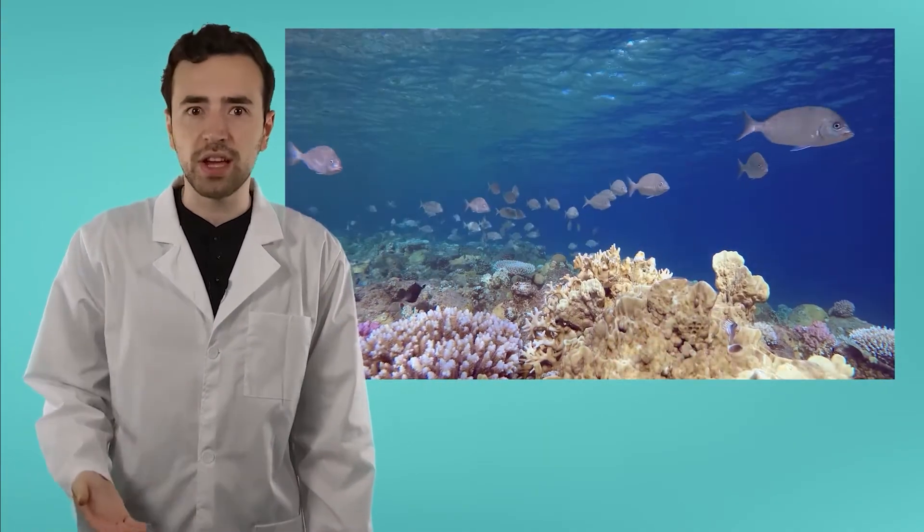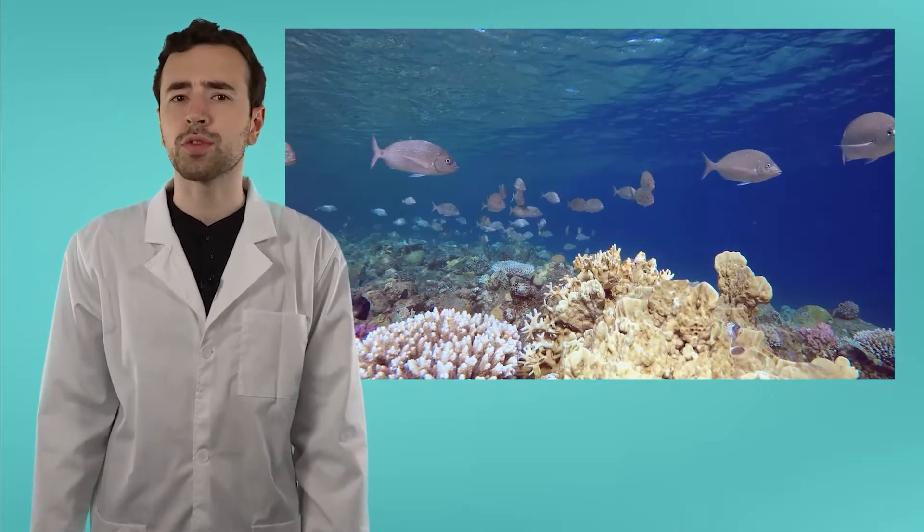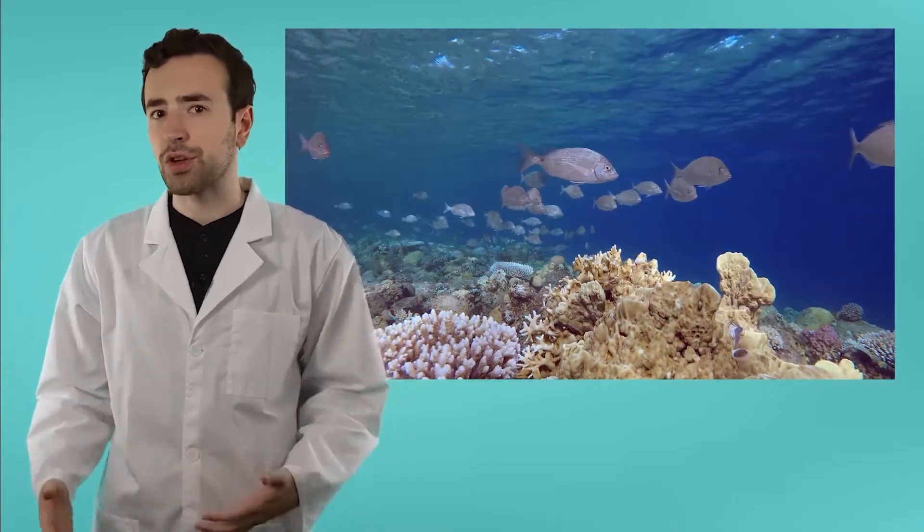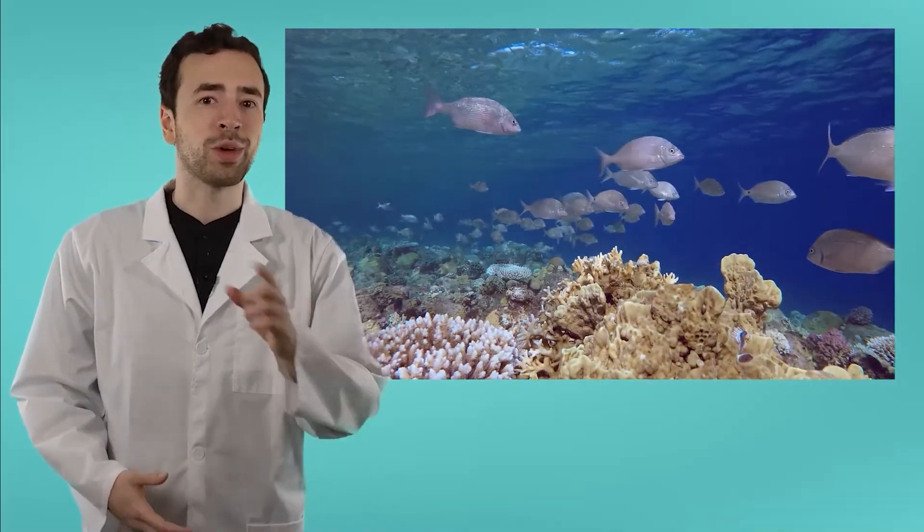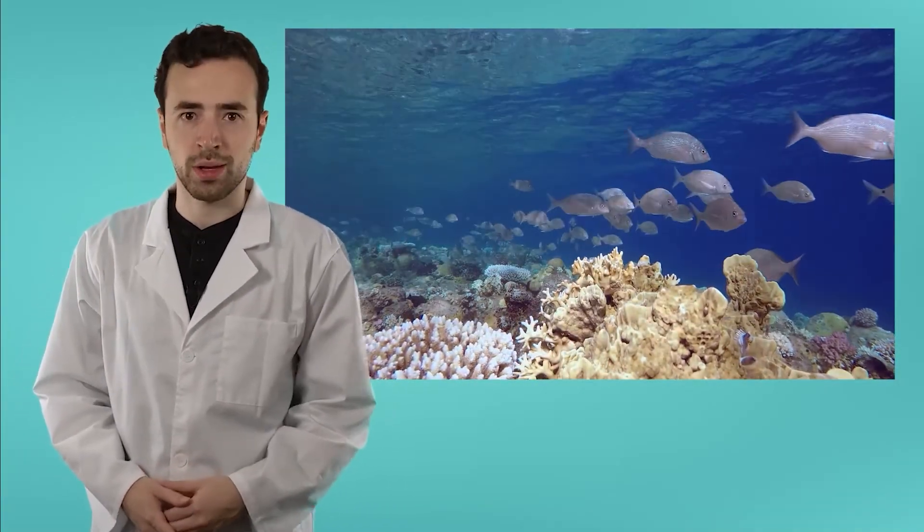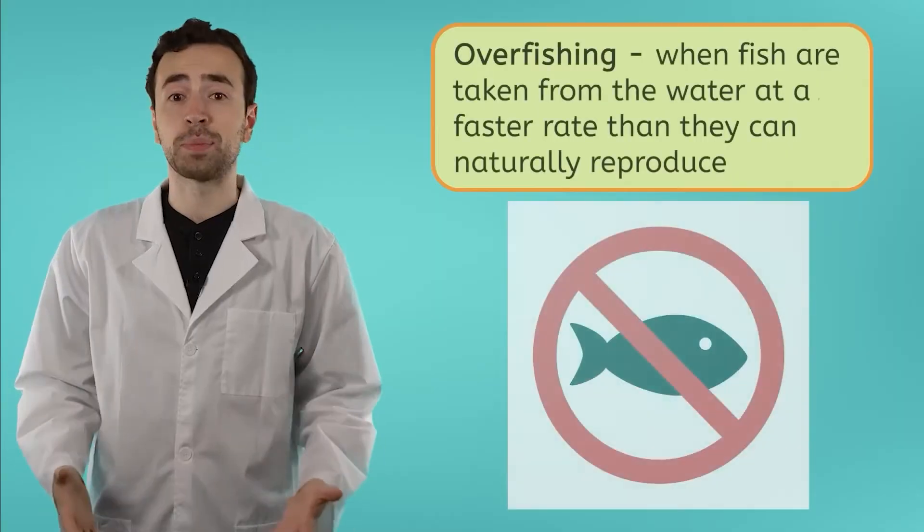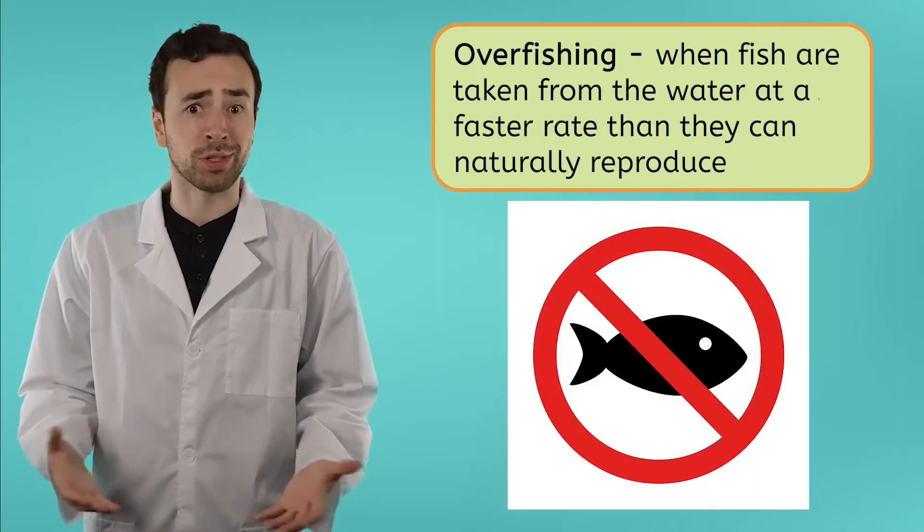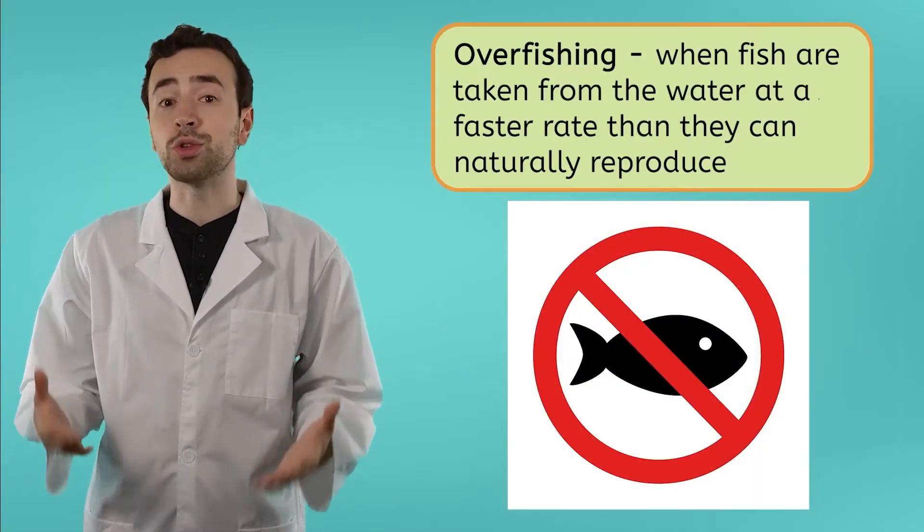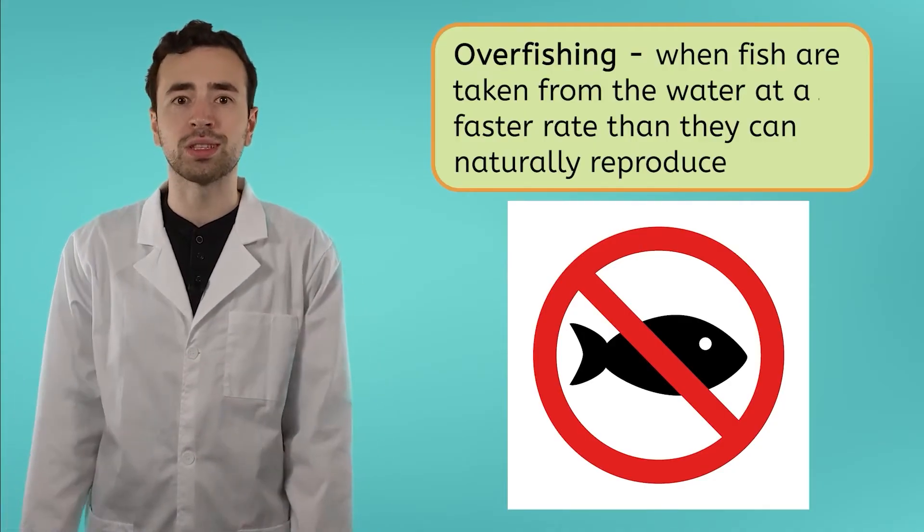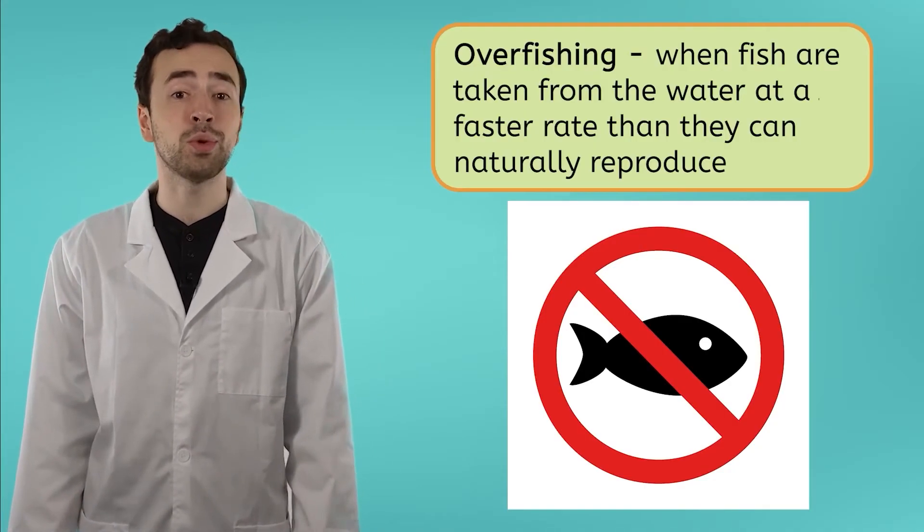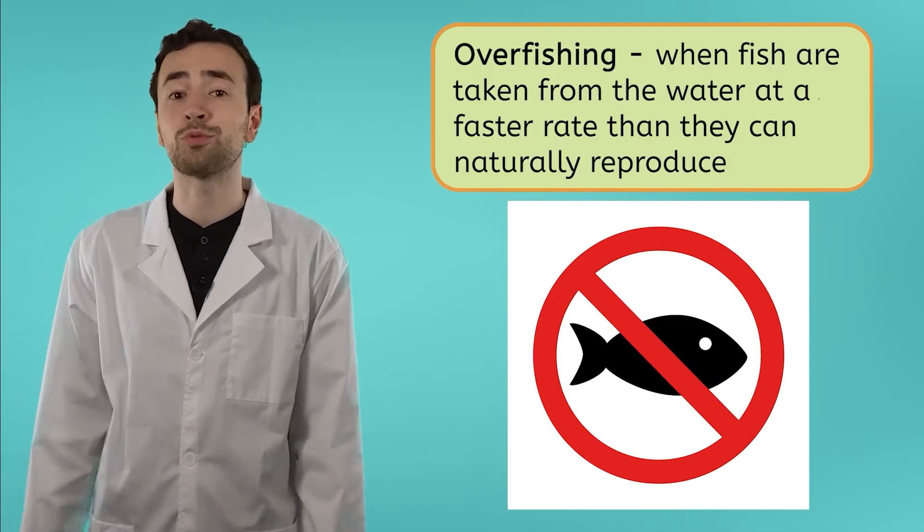The overuse of any resource can have negative consequences. For example, we learned that fish are a natural resource used for food. When we take fish from the water at a faster rate than they can naturally reproduce, we get what's called overfishing. Overfishing disrupts marine ecosystems, decreases fish populations, and reduces biodiversity, threatening the overall health of our oceans and the livelihoods of communities dependent on these resources.